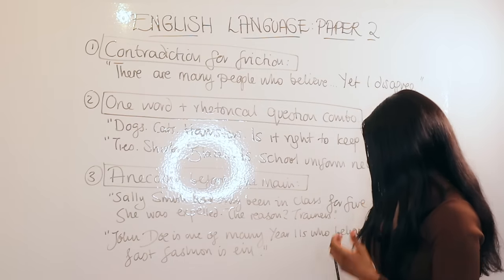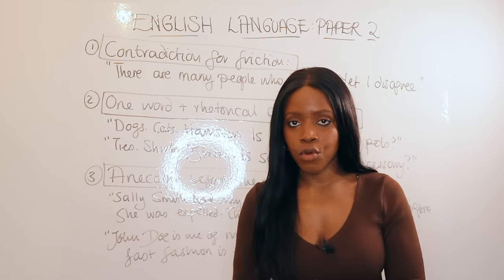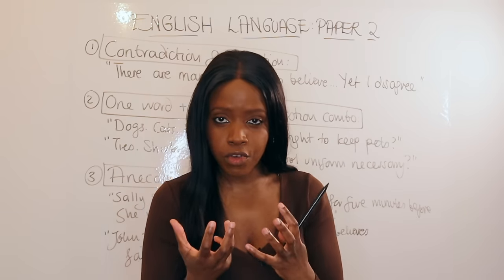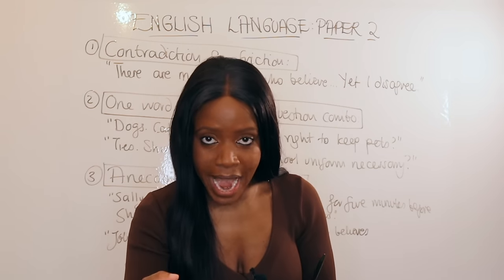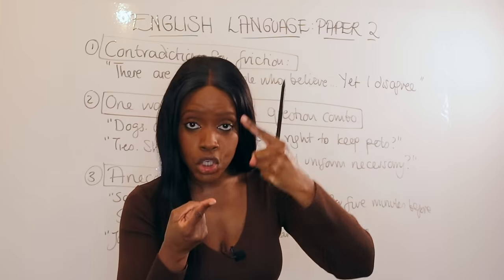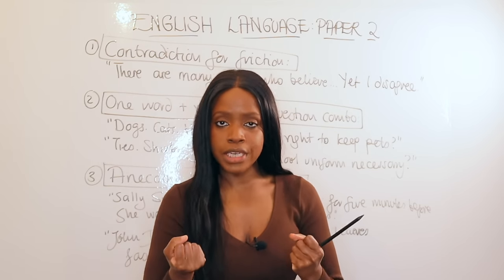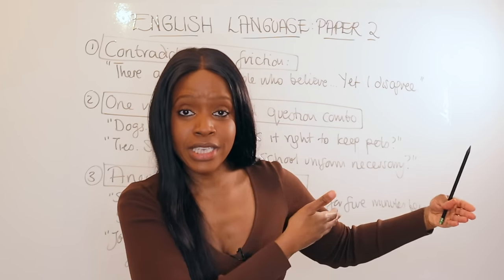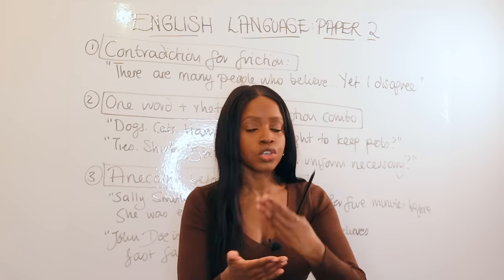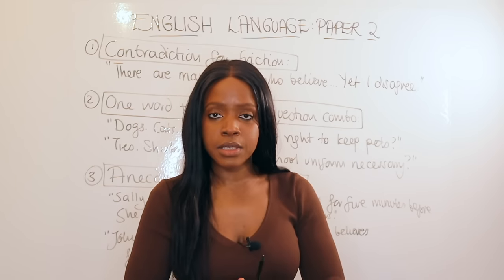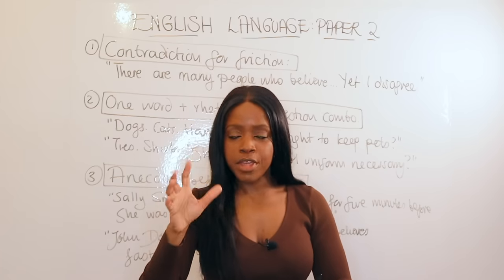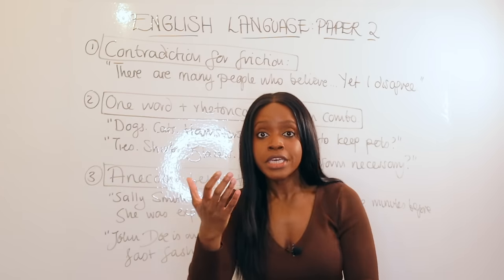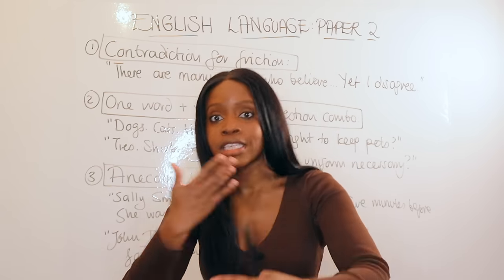Another example: 'John Doe is one of many year 11s who believes fast fashion is evil.' These three easy ways to start any persuasive writing essay are not only really impactful, but from the very opening you're saving time and showing your examiner you have a really strong handle on the topic. As they read your essay, they're looking for reasons to give you that grade seven, eight, or nine — as opposed to starting on the back foot and spending the whole essay trying to convince them.